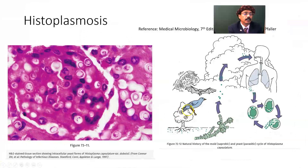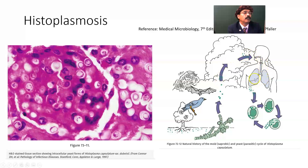Looking at the diagram: bird and bat excreta contain guano, and farmers dealing with chicken excreta fertilizer may also get this disease. The conidia from contaminated soil are inhaled and go to the lung, where they are phagocytosed by phagocytic cells. Histoplasma is a facultative parasite — it can multiply inside the phagocytic cell and then be disseminated in an immunocompromised person.